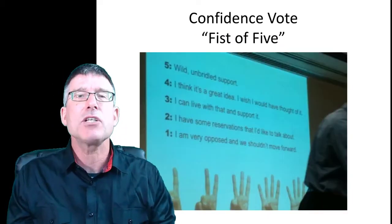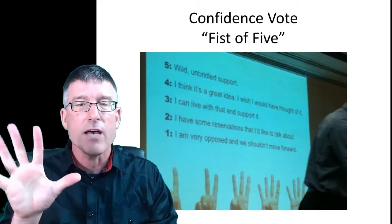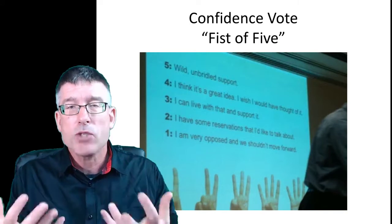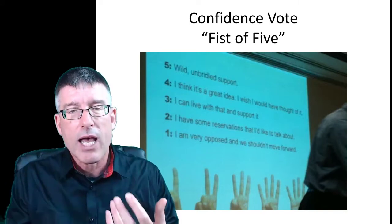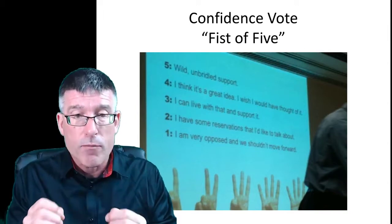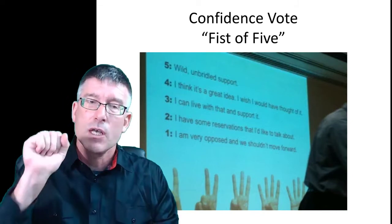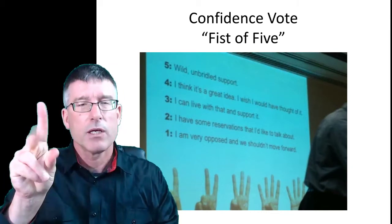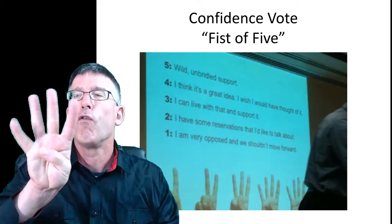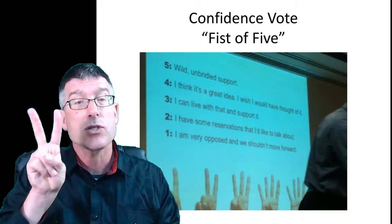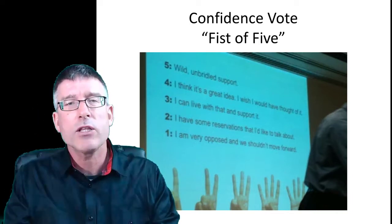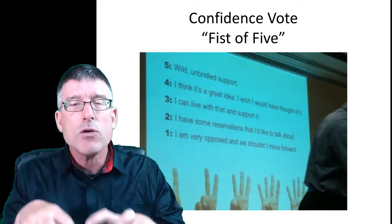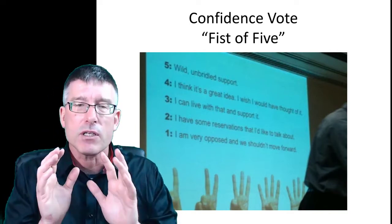Finally, the last output is the confidence vote — the so-called fist of five. This is where we poll the room. Every team presents their plan, and then we ask all the teams collectively: what is your confidence in this plan to reach the objectives you've created? Five means this is great, we can do it. Four is really good. Three means I will live with any decision the team makes. Two means I have serious reservations. One means this is going to be a disaster. It gives you a finer gradient of confidence than simply thumbs up or thumbs down.